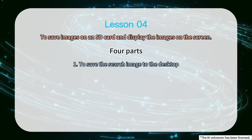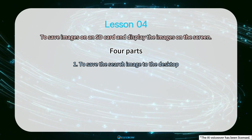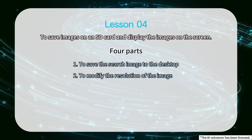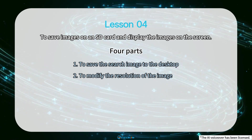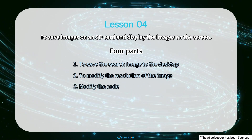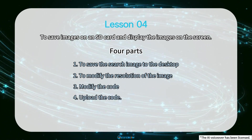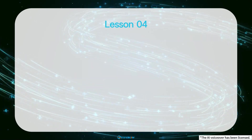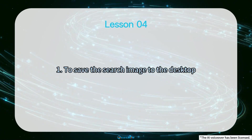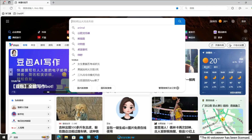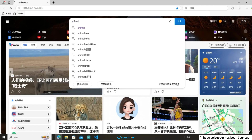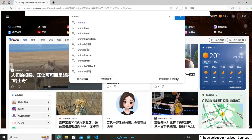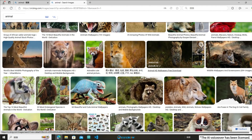The first part is to save the search image to the desktop. The second part is to modify the resolution of the image. The third part is to modify the code. The fourth part is to upload the code. Please open your browser and search for the image you want to display. I want to display pictures of animals on the Cropanel ESP32 Advanced HMI here.